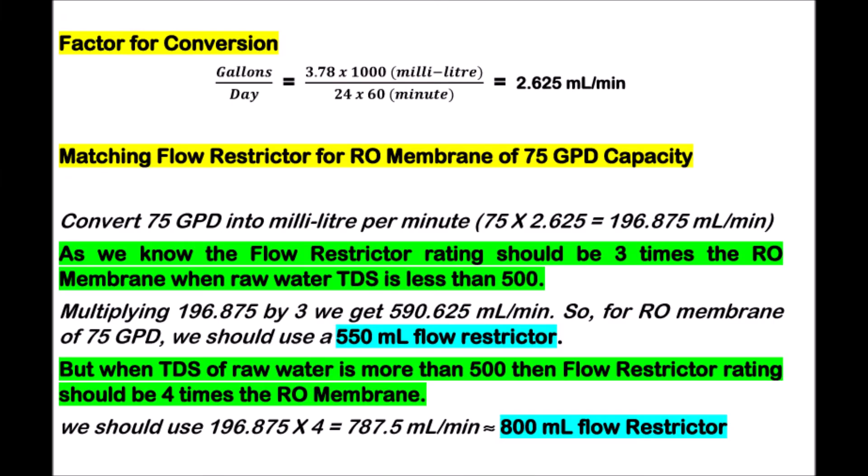To find the matching flow restrictor, we need to convert the RO membrane capacity in GPD into milliliter per minute. To convert it, simply multiply the RO membrane capacity in GPD by 2.625. You can see how we get this conversion factor.